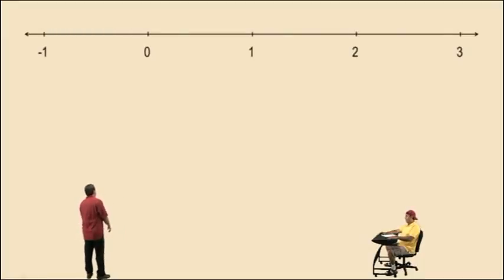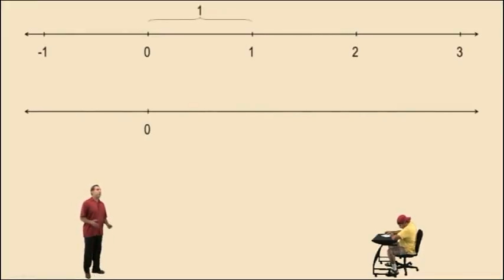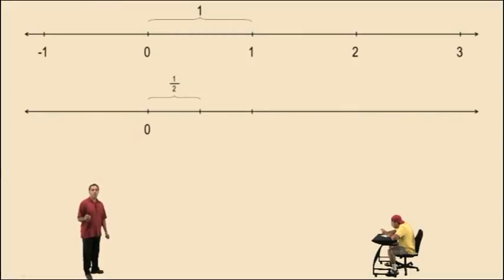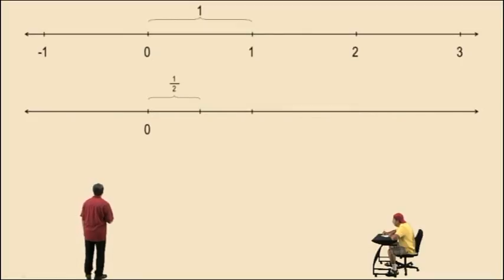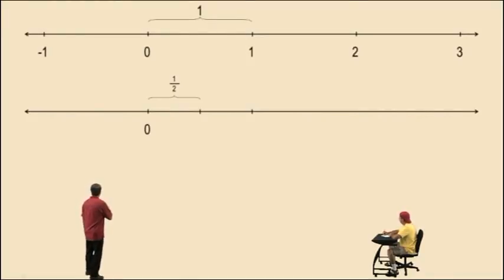Okay, here's a number line. Let's put another line below it. And now, let's take one whole and divide it into two equal parts. In other words, we are doing 1 divided by 2. And remember, earlier in the semester, I said division problems are represented by fractions. So that division problem, 1 divided by 2, is actually represented by the fraction 1 half. The 1, which is the number on the top of the fraction, is called the numerator. And the 2, which is the number on the bottom of the fraction, is called the denominator.